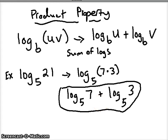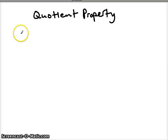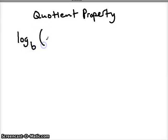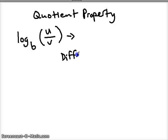So that's the product property. The second one is called the quotient property. The quotient property involves the log of any base of a quotient — a division of two things. These could be numbers or expressions, and we can rewrite that as what's called a difference of logs.